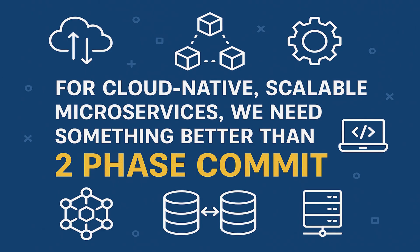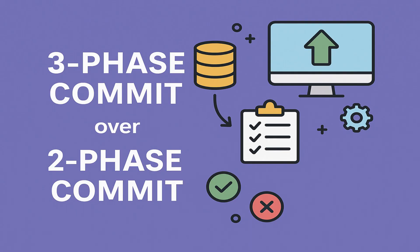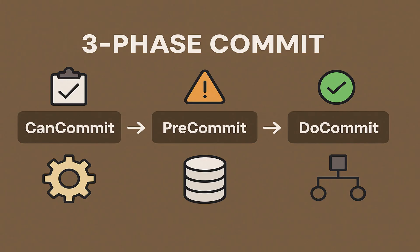Because of these limitations, the industry moved towards more resilient patterns. The first attempt was to fix the issues in two-phase commit with a three-phase commit. After that, we accepted the reality that perfect consistency is hard in distributed systems and started using eventual consistency models. Finally, we built practical solutions like the saga design pattern and the outbox pattern. We'll go through all of these one by one in the upcoming videos, starting next with three-phase commit — how it improves over 2PC and why it's still not good enough for microservices.